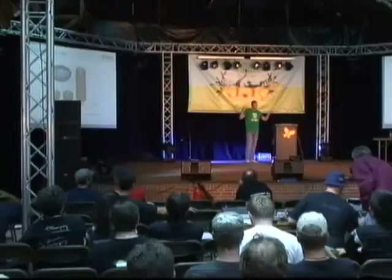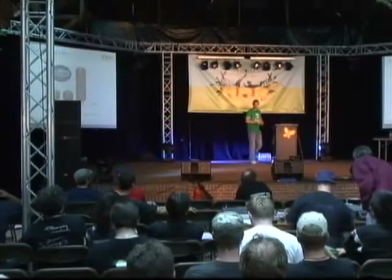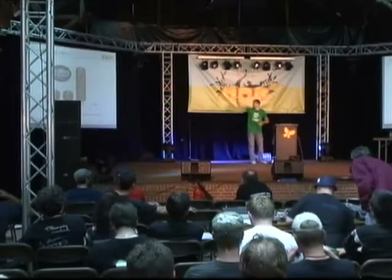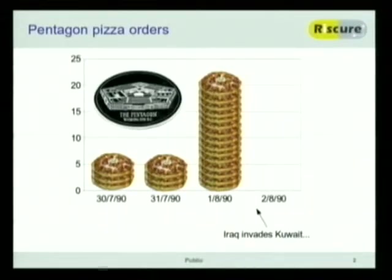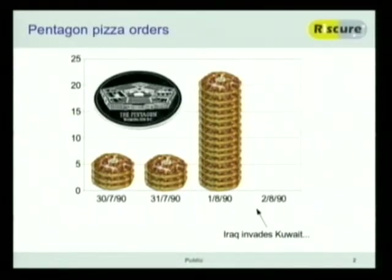They found out that huge international disputes usually cause the big pizza spike. And this has been anecdotally called the pizza attack on the Pentagon.